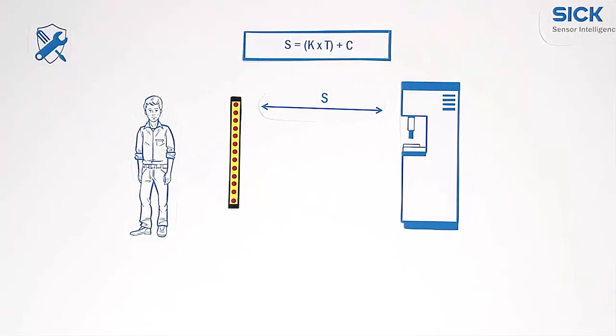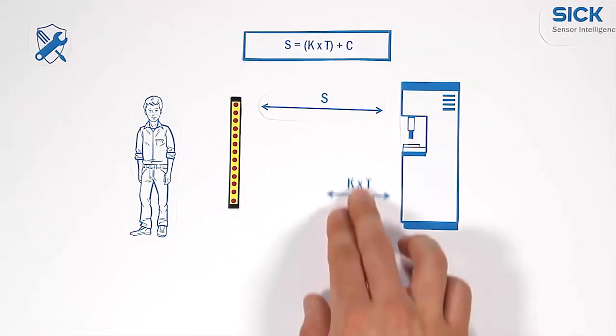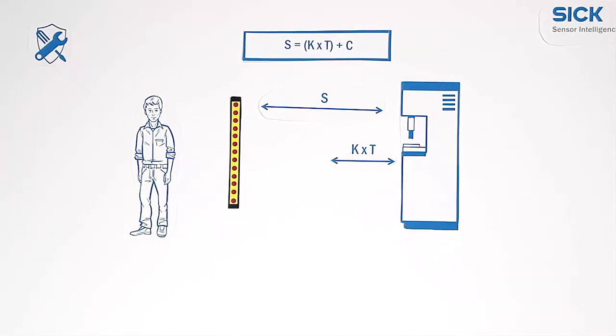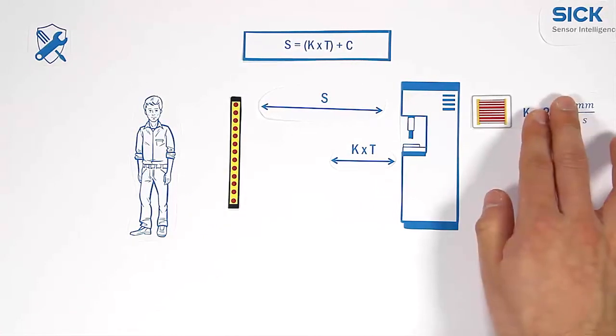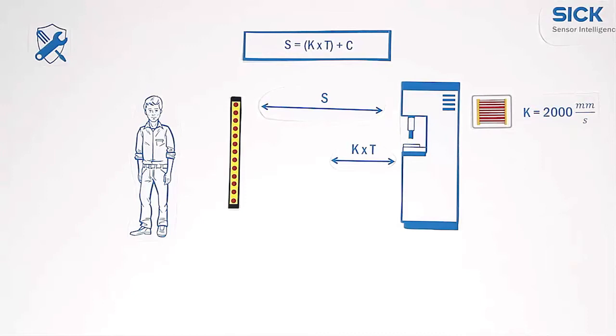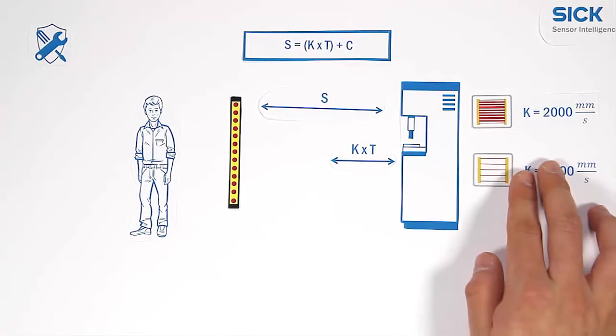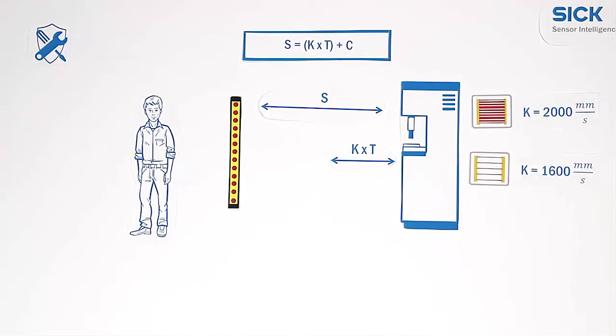The first part of it is the approach speed K multiplied by the stop time of the machine T. In case of light curtains, an approach speed of 2000 mm per second is mostly valid. In the multi-beam case, 1600 mm per second is the correct value.